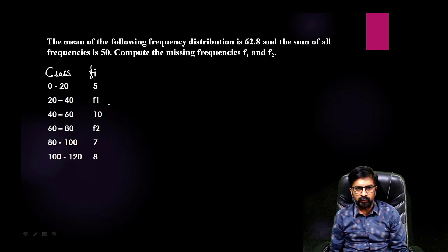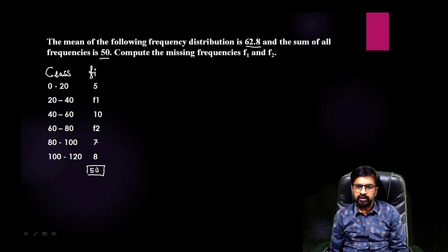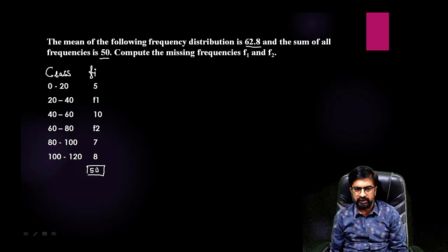So let us start without wasting much time. You can see class, frequency, and the mean is 62.8, sum 50. So let me write down the sum of this is 50, so from this you will get one equation.